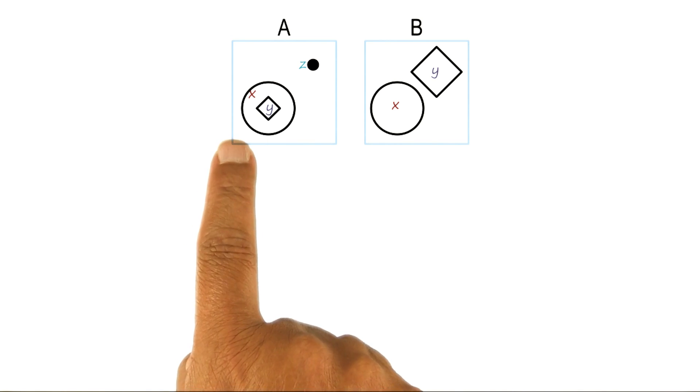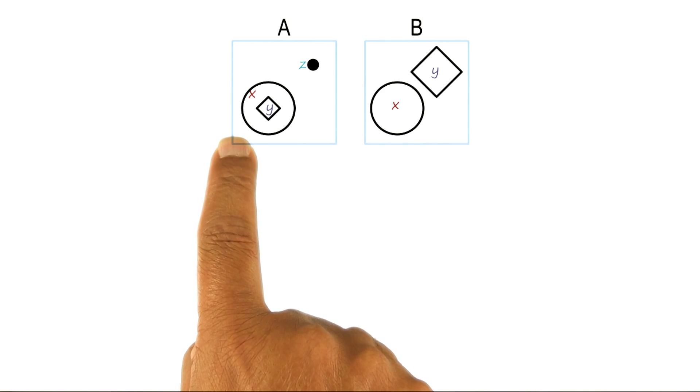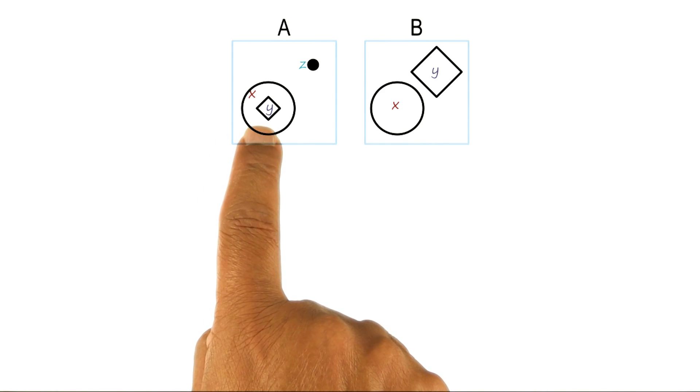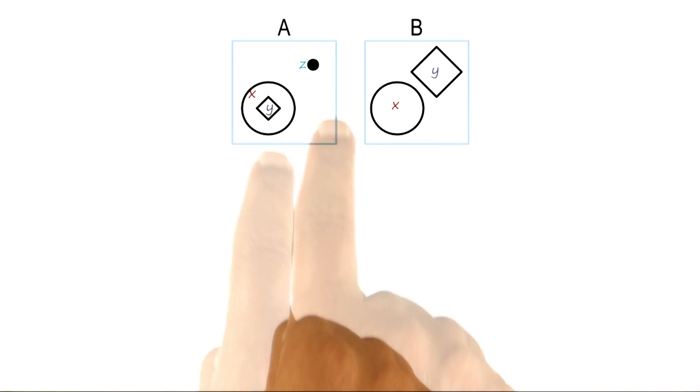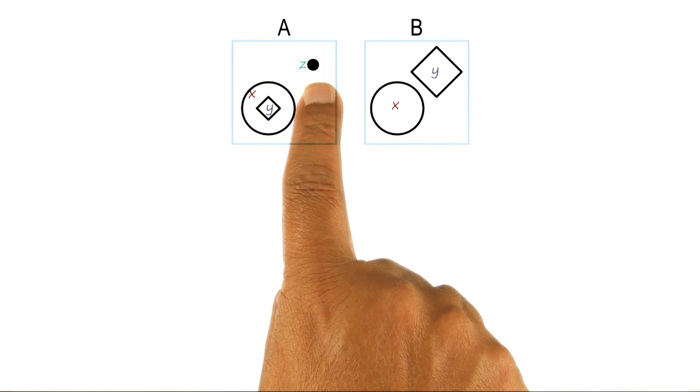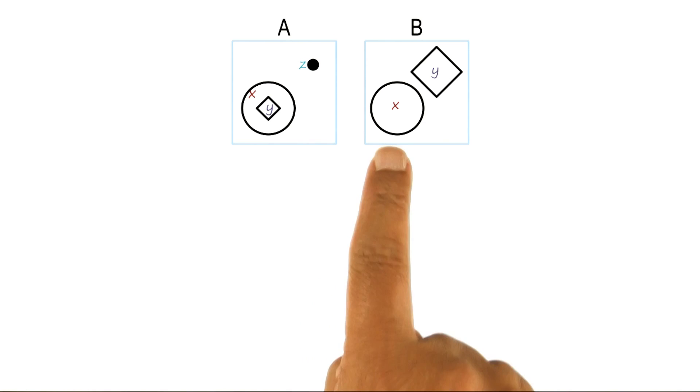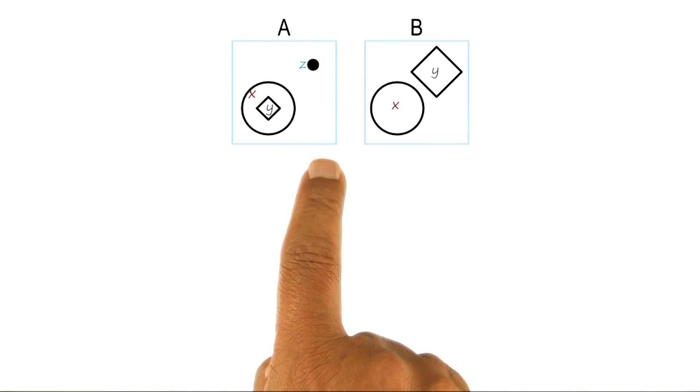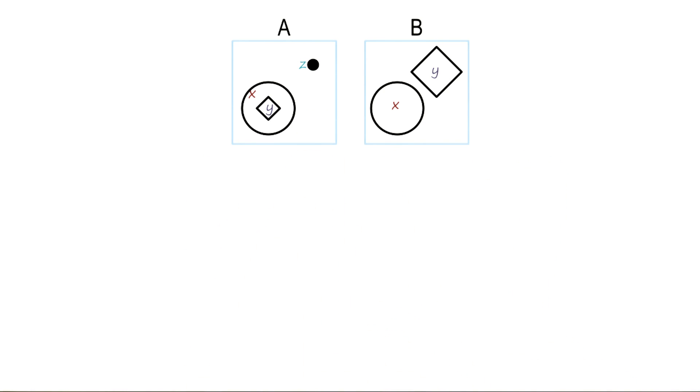Inside A is a circle, I'll label it X. Also inside X is a diamond, I'll label it Y. Here is a black dot, I'll label it Z. We can similarly label the objects in B. So inside A are three objects, X, Y, and Z.